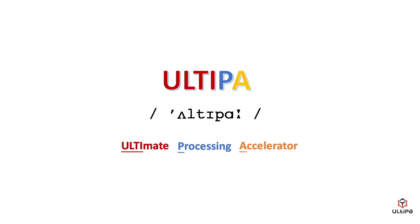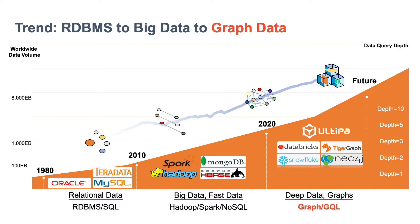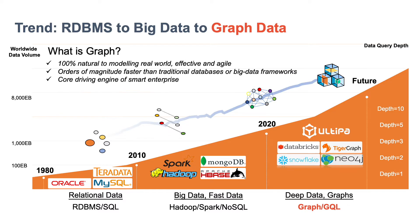Ultipas stands for Ultimate Processing Accelerator. Over the past 40 years, we have seen a major infrastructure trend of moving from relational database to big data and eventually to deep data or graph data. Because traditional databases are rigid in data modeling and slow in data processing, graph database is both flexible and natural in data modeling and much faster in data processing and value extraction. It will be the core driving engine of smart enterprise and business intelligence.